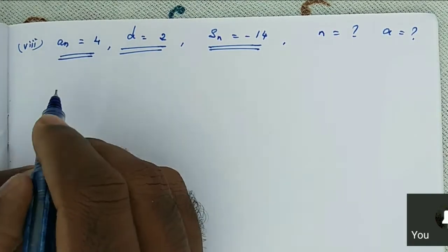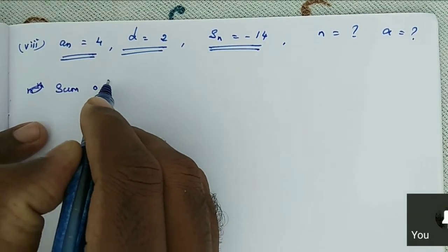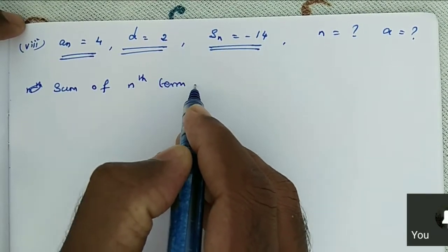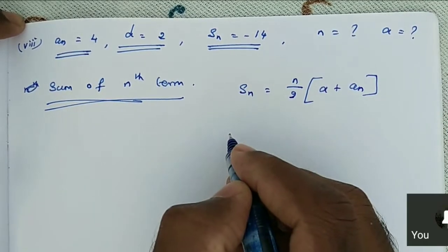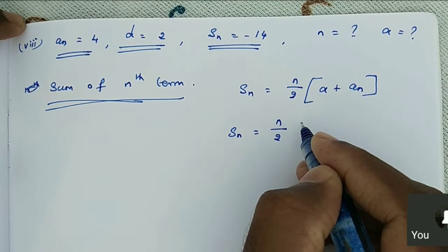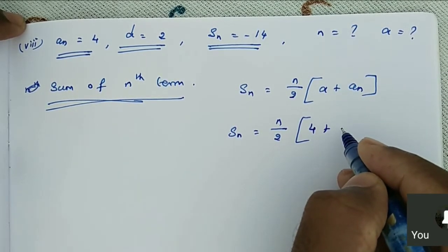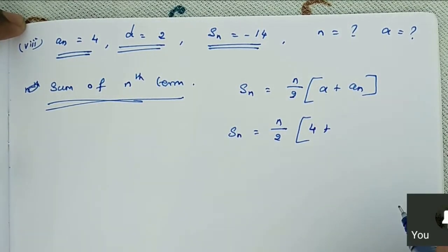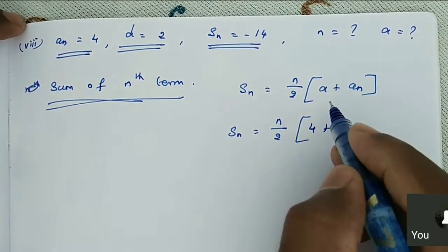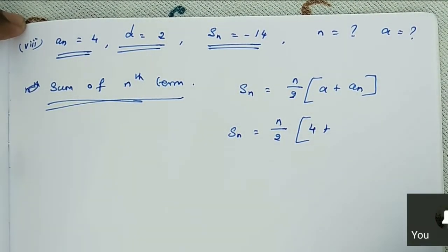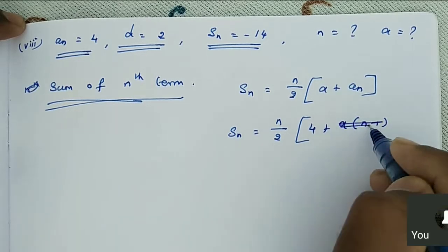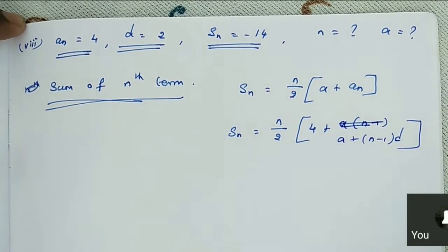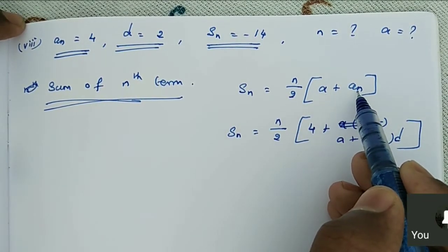Using the Nth formula also — here we know A_n, right? So S_n is equal to N by 2 times A plus A_n. But we need to find A value, so how can we use this formula? A_n is equal to 4, A value we need. Think over that — we can go to some other method. They give us D value. Shall we use A_N as A plus N minus 1 into D? So S_N is equal to N by 2 times 2A plus N minus 1 into D. That is the A_N formula here.